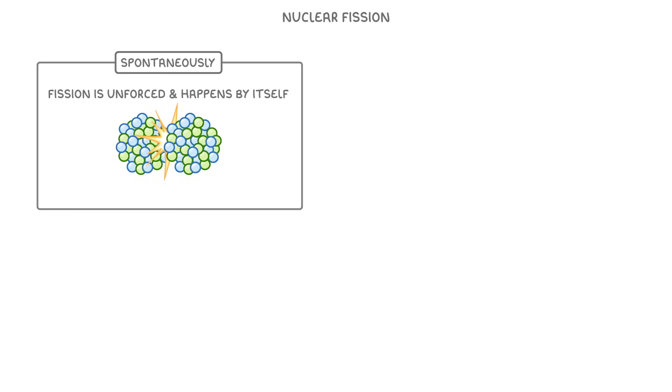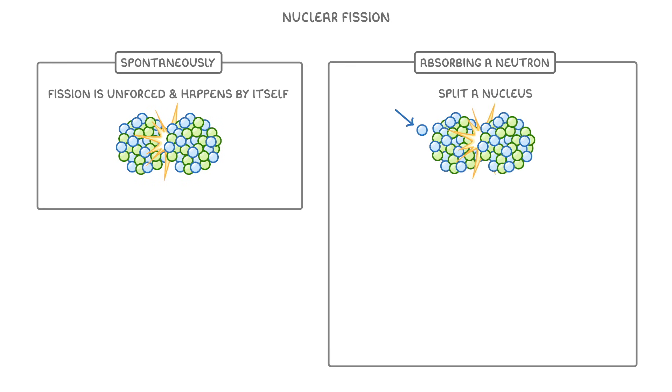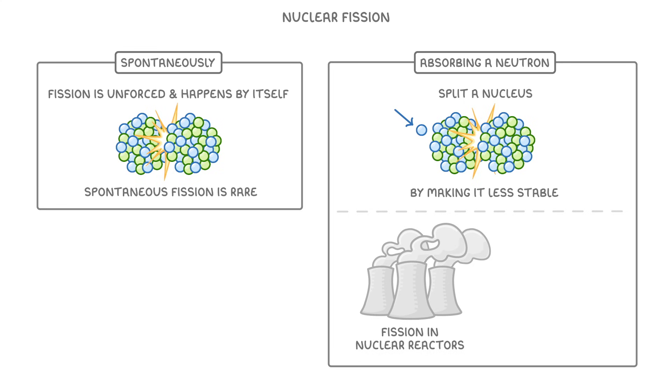Nuclear fission can occur in two different ways: either spontaneously, where the fission is unforced and happens by itself, or by absorbing a neutron, which can split a nucleus by making it even less stable. In practice, spontaneous fission is rare, so when we use fission in nuclear reactors, we have to use neutrons to get the process started.